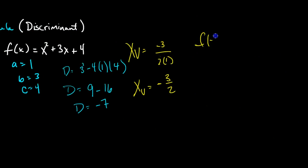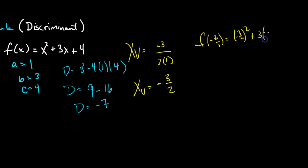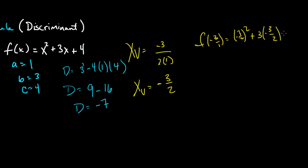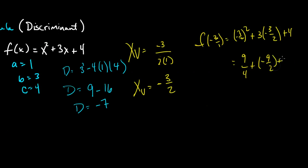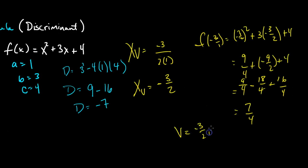So x at the vertex is negative 3 halves. We'll substitute that into our original equation: f of negative 3 halves equals negative 3 halves squared plus 3 times negative 3 halves plus 4. That gives us 9 fourths plus negative 9 over 2 plus 4. In terms of fourths, that's 9 fourths minus 18 fourths plus 16 fourths, which equals 7 fourths. So our vertex is at negative 3 halves, 7 fourths — above the x-axis, and it opens up because we have a positive x squared.